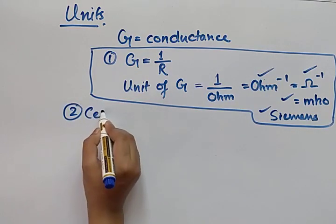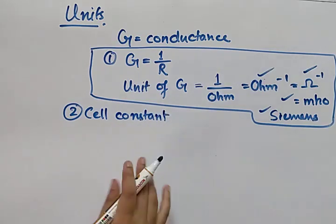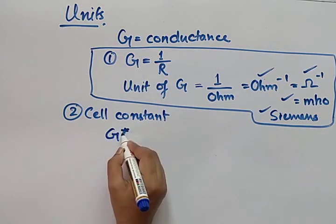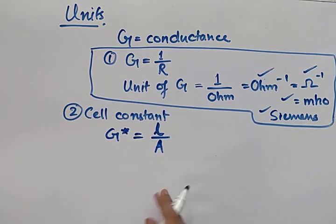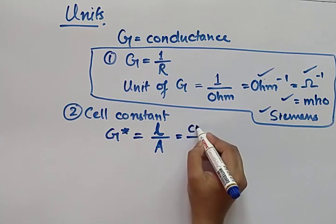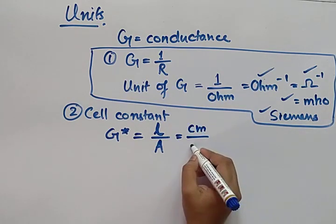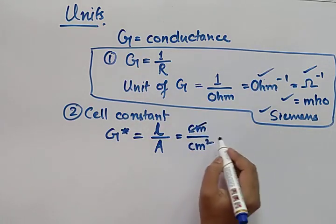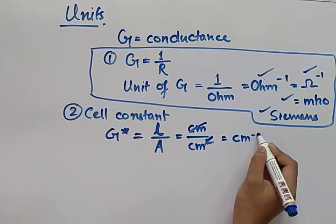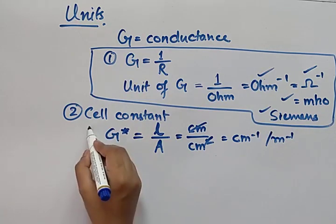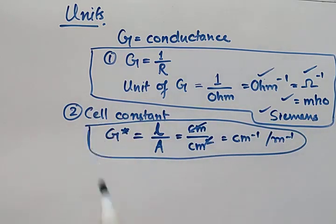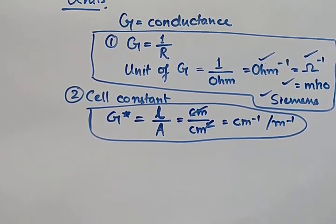Next, the second topic: cell constant. The cell constant symbol is G-star. The formula is l by a — that is, length between two electrodes divided by area of electrode. The unit of cell constant is centimeter inverse or meter inverse.